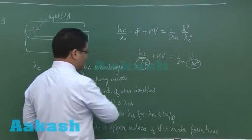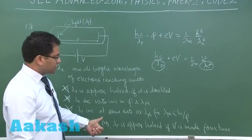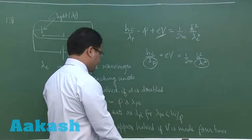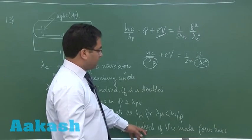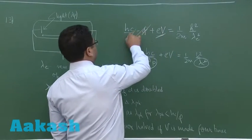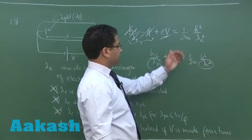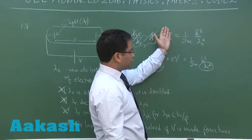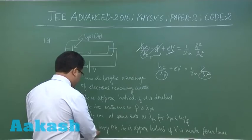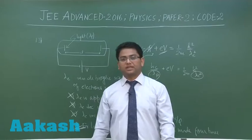The variation of lambda_E and lambda_P is not the same, so option C is incorrect. For option D, when the potential difference is very large, the work function term can be neglected. In that approximation, lambda_E is approximately half when V is made four times. This comes out to be the correct option. So option D is correct for question 13.